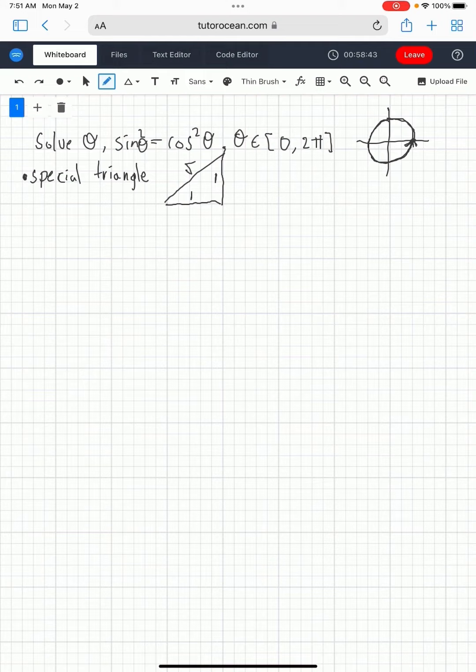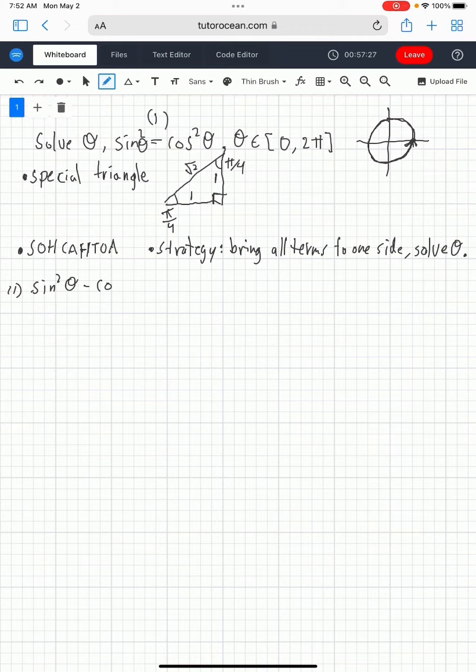To solve this question, you need to know the special triangle that has opposite and adjacent sides of 1 and hypotenuse of root 2 and angles of pi over 4. And you're also going to need to know SOHCAHTOA, specifically that tan is equal to opposite over adjacent.